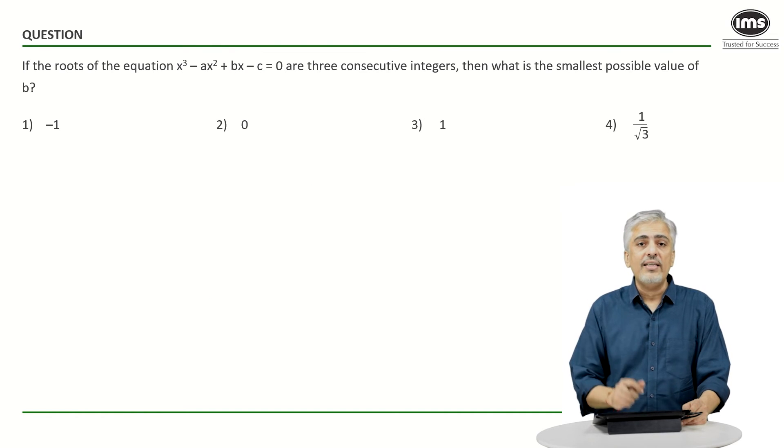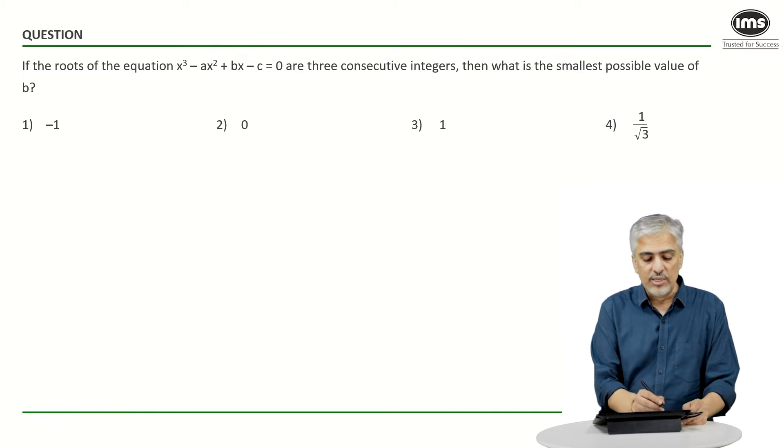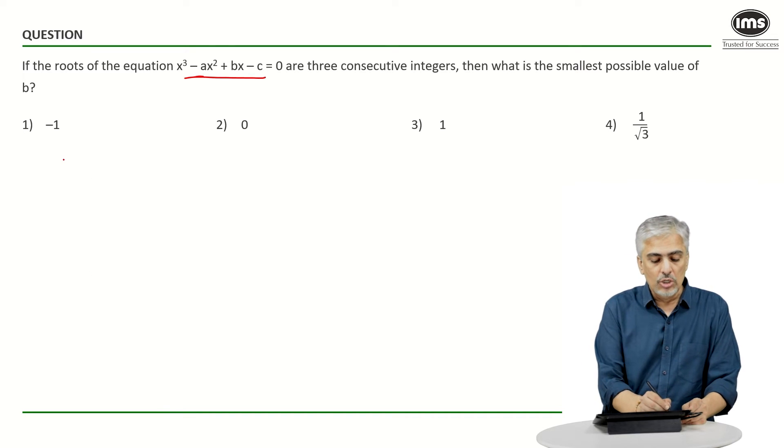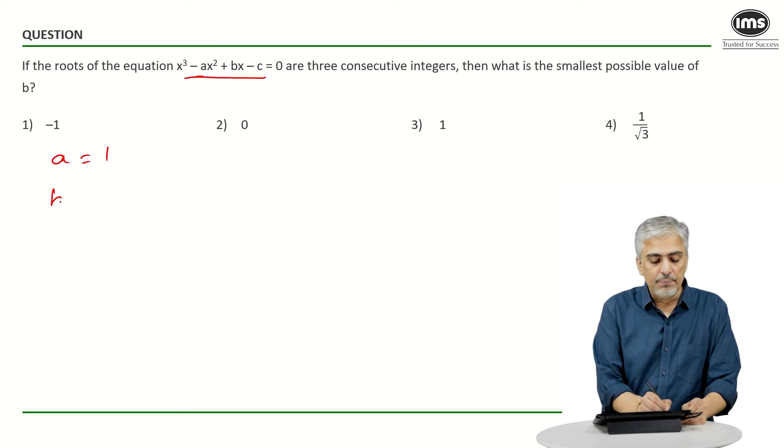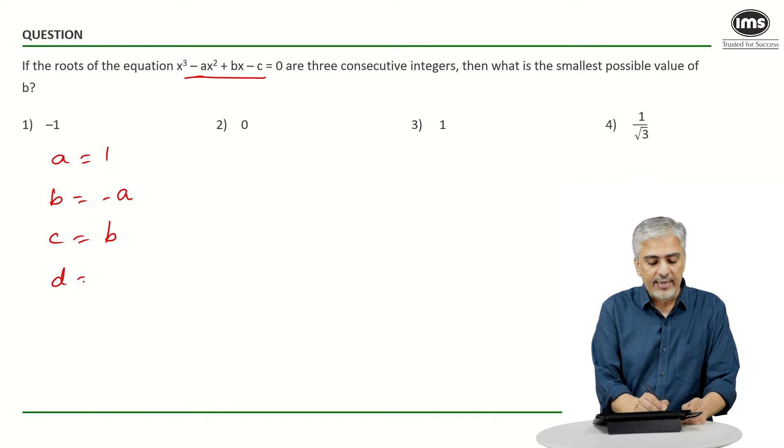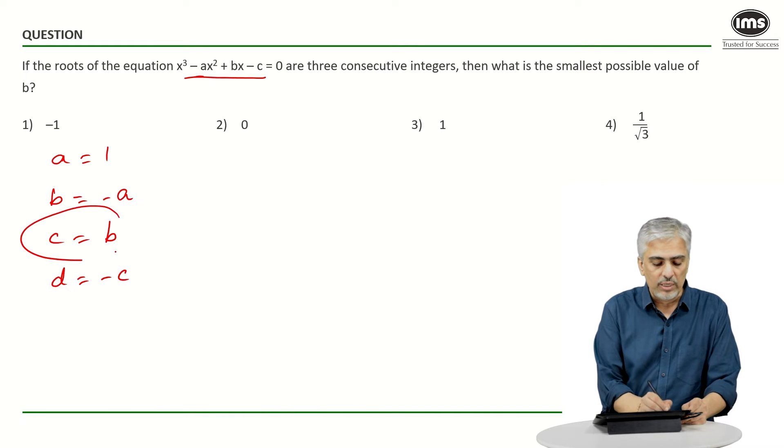Now if I look at our equation, our equation is x³ - ax² + bx - c. So according to what we wrote, a will be 1, b will be -a, c will be b, and d will be -c. We are concerned only with this part.